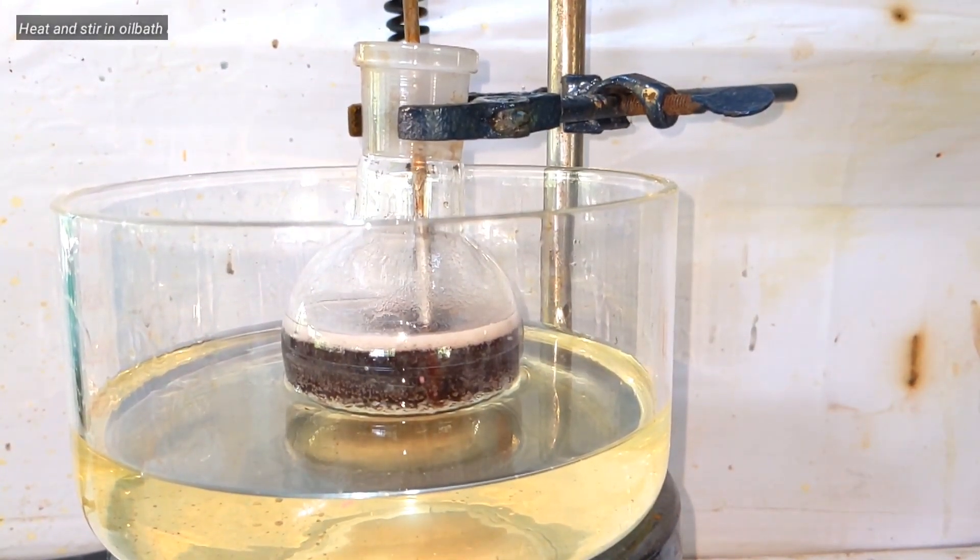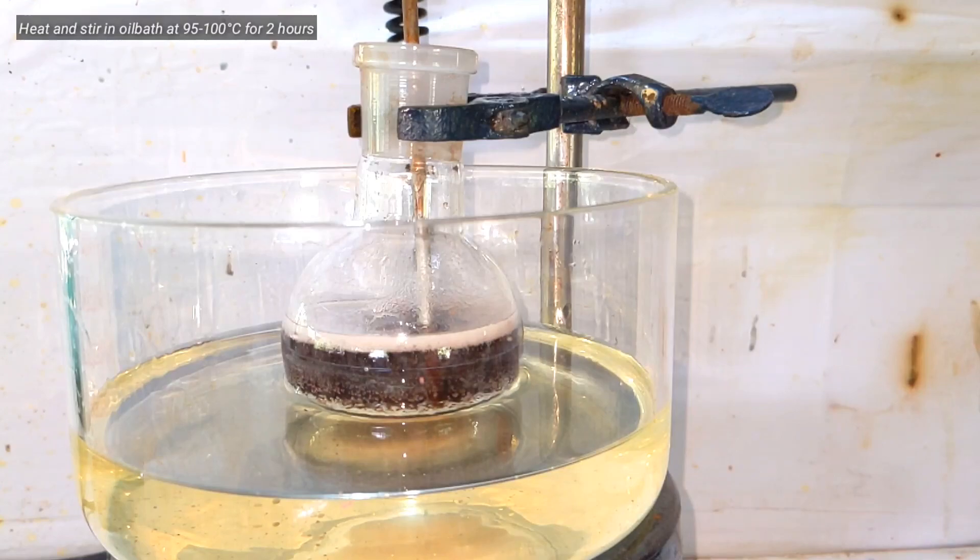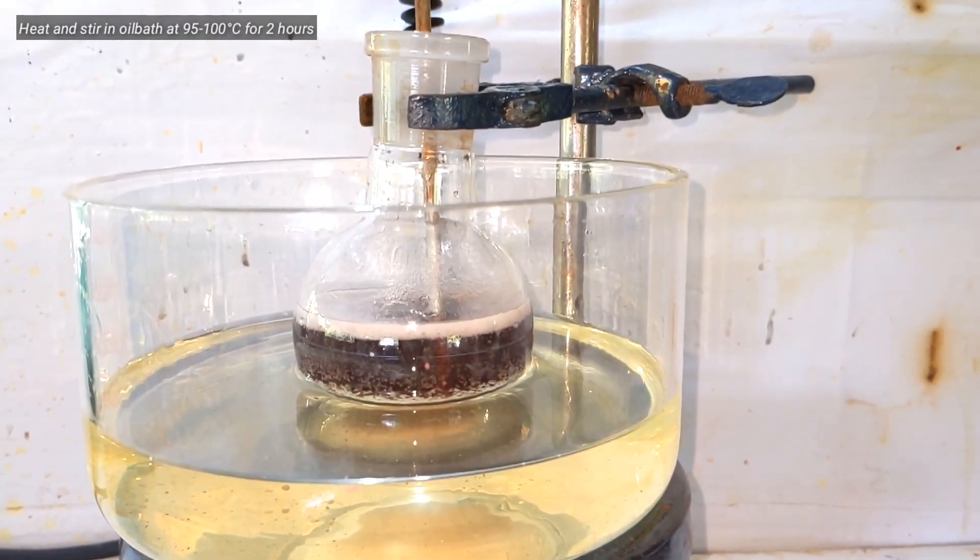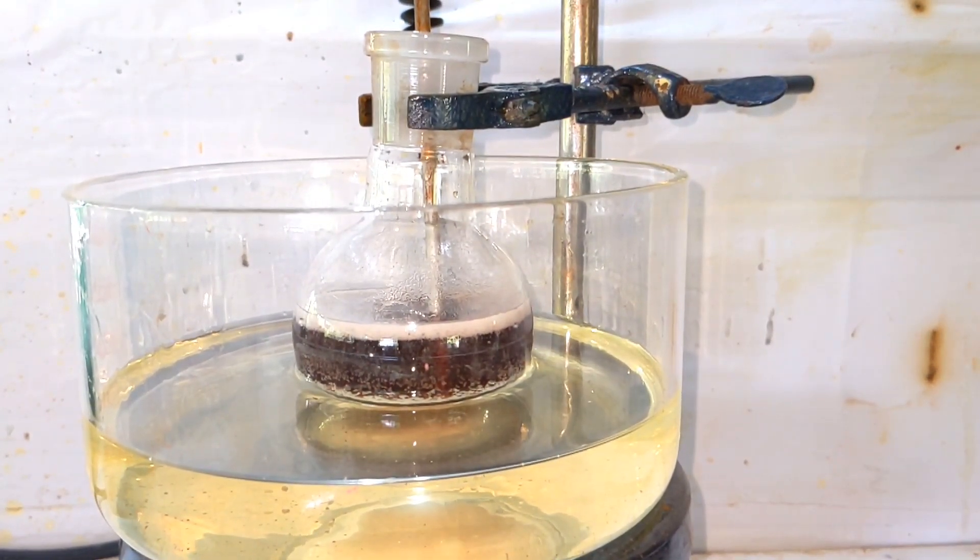Next we place the flask in an oil bath and then heat and continuously stir the flask at 95 to 100 degrees Celsius for 2 hours.